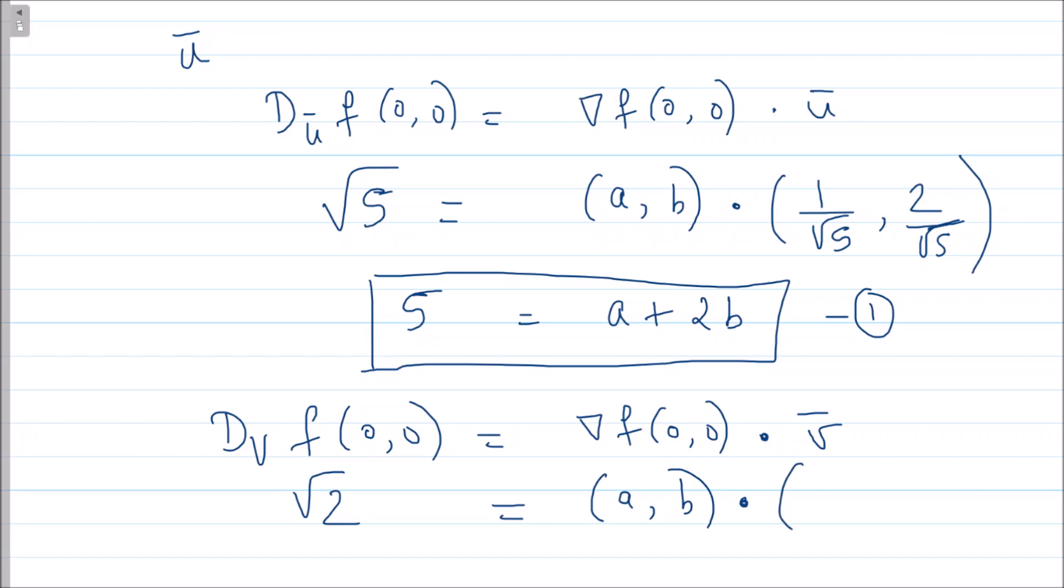Again, if I take the dot product, I get a - b equals 2, because the √2 which is in the denominator on the right hand side I will bring to the left hand side. So I have equation 1 and 2.